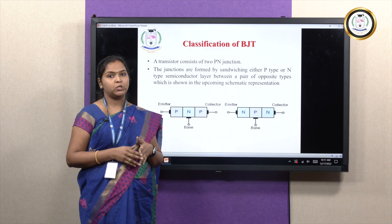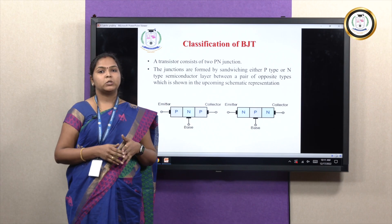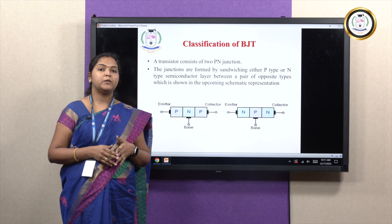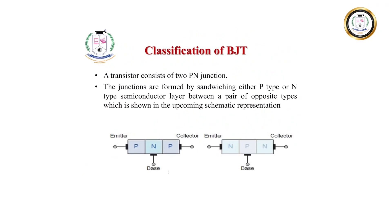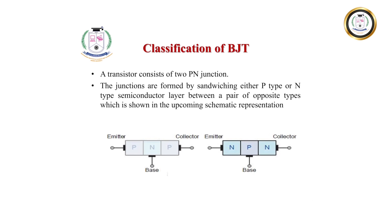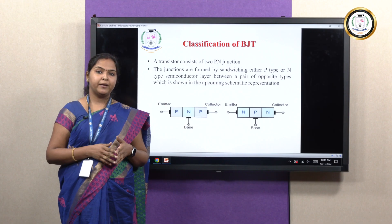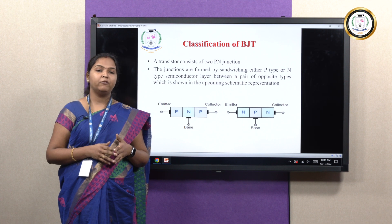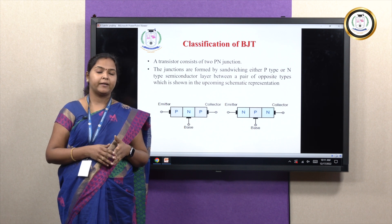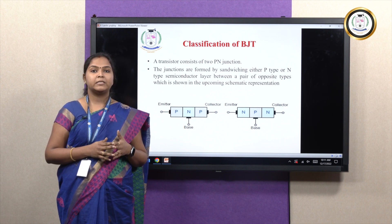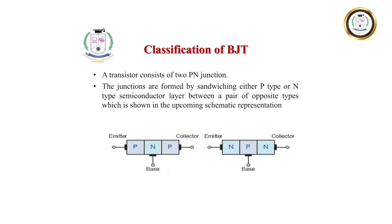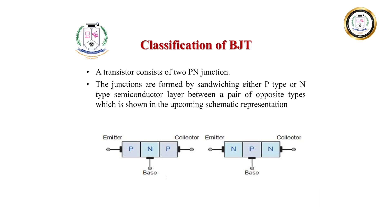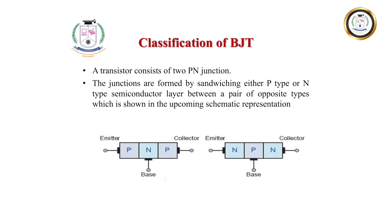Coming to the classifications of BJT, the bipolar junction transistor has been broadly classified into two types: one is NPN transistor and the other is PNP transistor. In an NPN transistor, current conduction takes place completely with the help of the majority carrier, which is the electrons. In a PNP transistor, current conduction takes place completely with the help of holes.